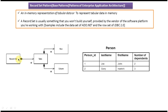Now if you read the definition again, you will understand it easily: a Record Set is an in-memory representation of tabular data — it represents tabular data in memory. This is the Record Set design pattern. Thanks for watching.